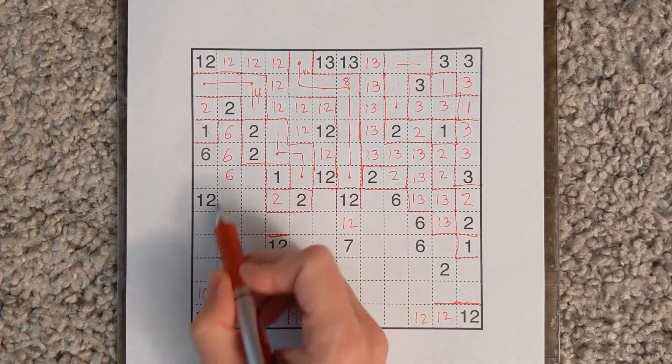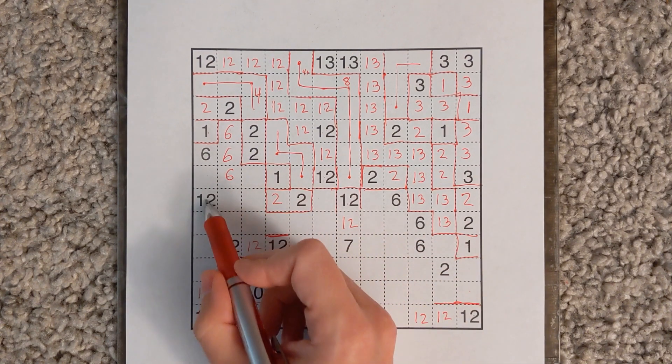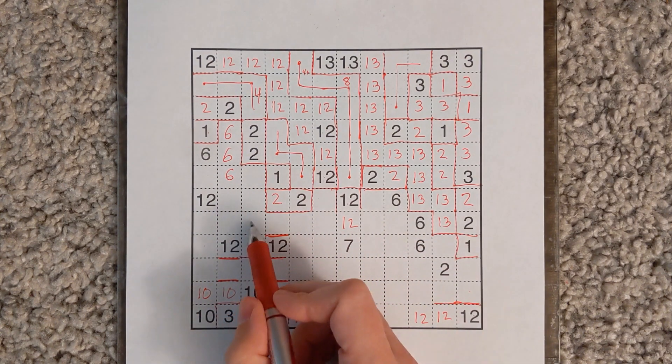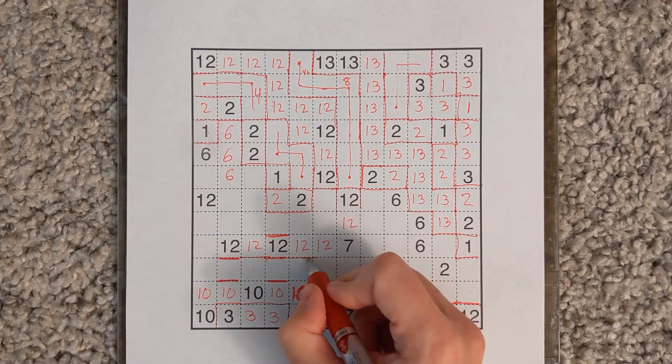These 12 up here are going to have to come through a channel like this. And right now we can take 1, 2, 3, 4, 5, 6, 7, 8, 9, 10, 11, 12. So something like this.